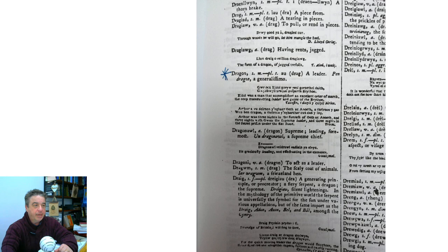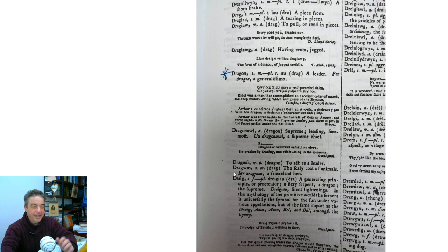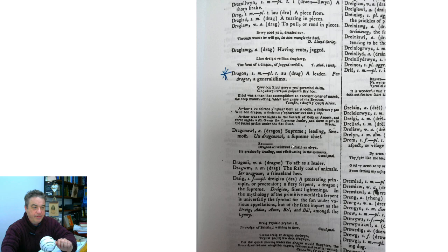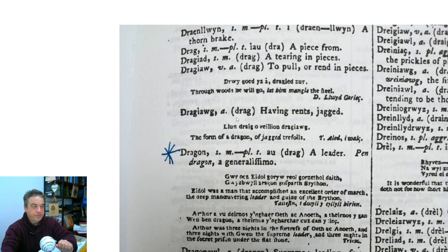Before we say these things are just made up — I don't know why or how they'd invent a whole dictionary, but there you go. 'Drag' is a piece; 'dragiad' is tearing in pieces; 'drag' means to pull or rend in pieces; 'dragiog' means having rents, jaggy. That's the full definition of the word. The verb 'to dragon' means to act as a leader — it's the supreme role. A dragon means supreme, leading, foremost. You've got 'dragon' as a leader and 'pen dragon' as generalissimo, with all the associated verbs.